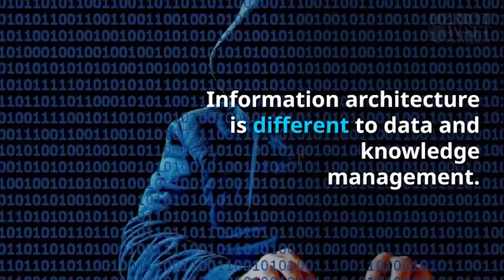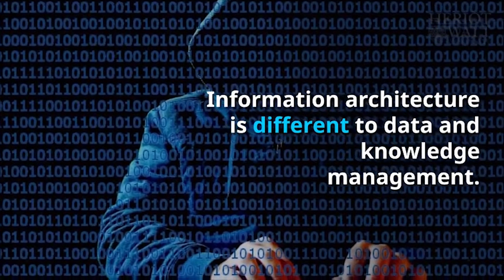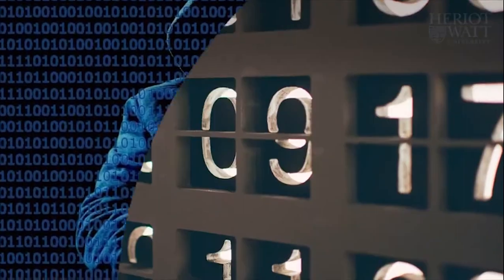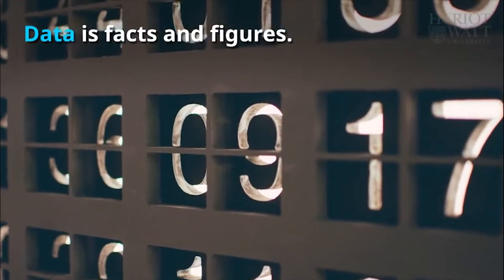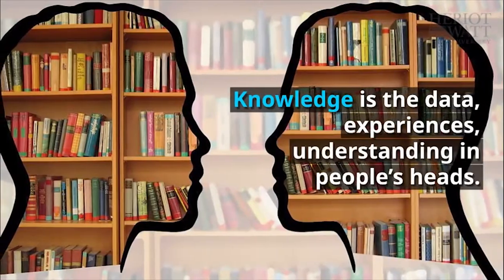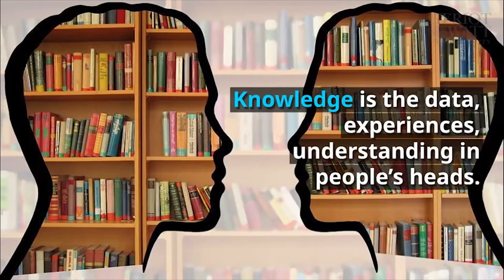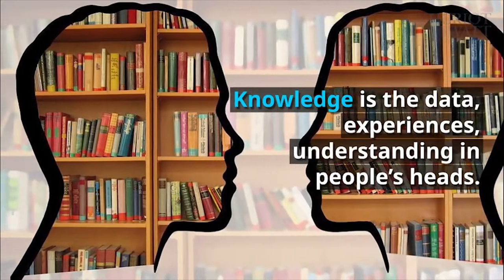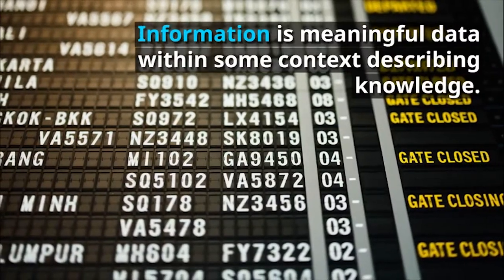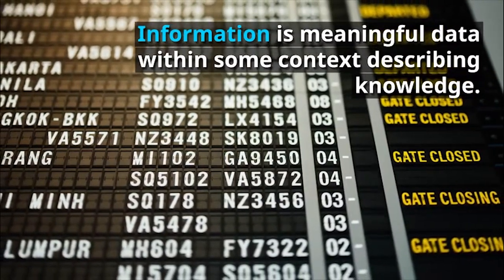Information architecture is different to data and knowledge management. Data is facts and figures. Knowledge is the data, experiences and understanding in people's heads. Information is meaningful data within some context describing knowledge.